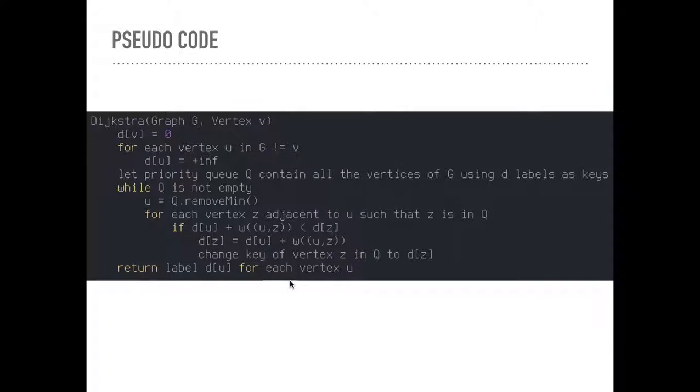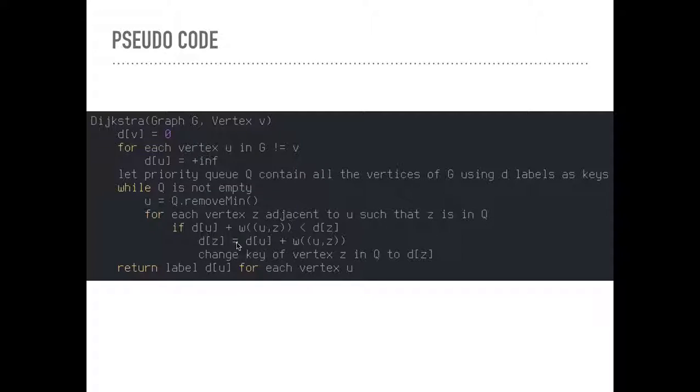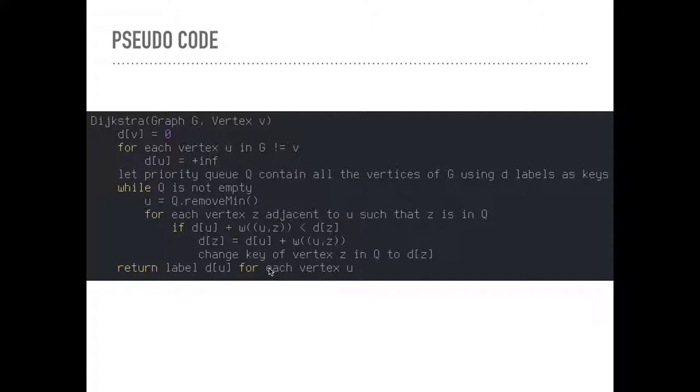And we say if it's less than just the regular distance to Z, well, at one time this was 10, right? So this was 10. And so we said if the distance that brought us to E, the shortest distance that brought us to E so far, plus this edge, which was 4 plus 1 is 5, it was less than 10. So this was true, this if statement. And so we just set the distance to G equal to 4 plus 1, which was 5.